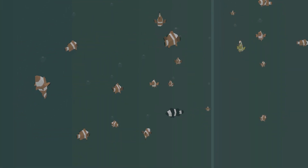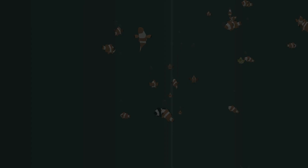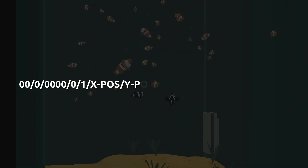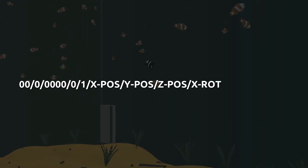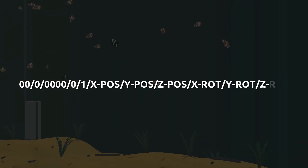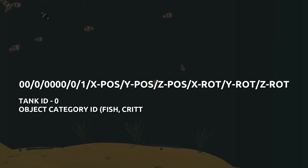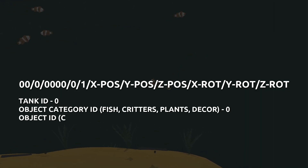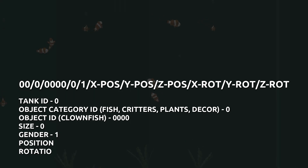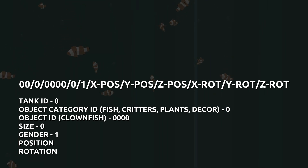I had a couple of theories on how to save all of this data smoothly. Originally I had thought of each object relaying its information through one long int, and splitting that int into smaller ints of data. For example, this was a demo int for the male, baby, orange clownfish, including its position and rotation. I'll put a diagram on the screen to hopefully make it a bit more clear. This long variable is made up of multiple smaller pieces of data: the tank id, the object type — in this case fish — the object id which is the id of the orange clownfish, the size, gender, and position and rotation.